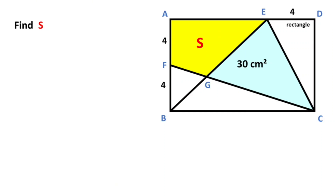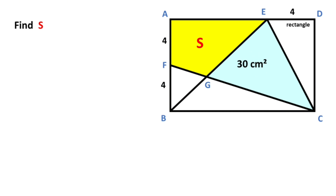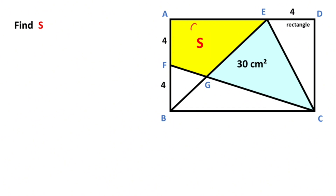Hello everyone. In this video we have one rectangle and these three parts are given as four units. The area of the blue shaded triangle is given as 30 centimeters squared. The question is: what is the area of the yellow shaded region?